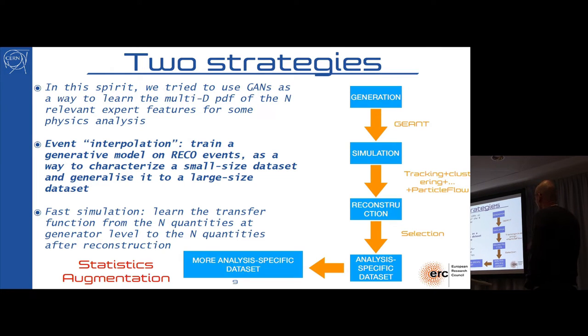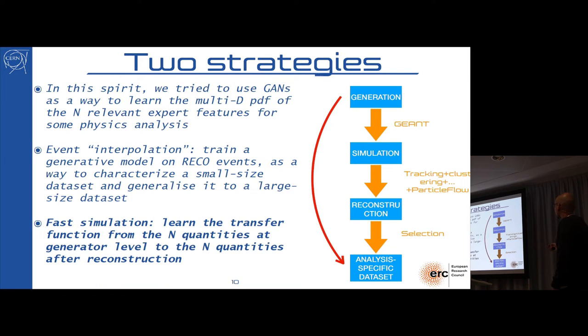This is where this work in progress starts. We have thought about two possible applications. One is basically some sort of data augmentation technique, where you start from a subset that was generated through the classical way, and then you train a generative model that learns the distribution of the n quantities that you care about at reconstruction level, after you apply your selection, and basically gives you back that knowledge of that PDF that you can use to generate new versions.